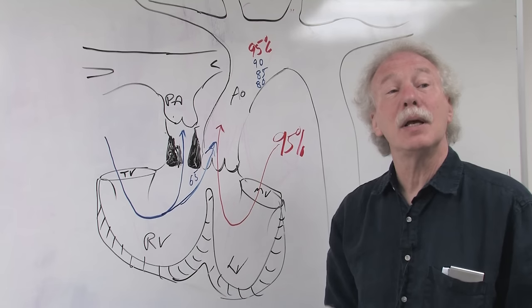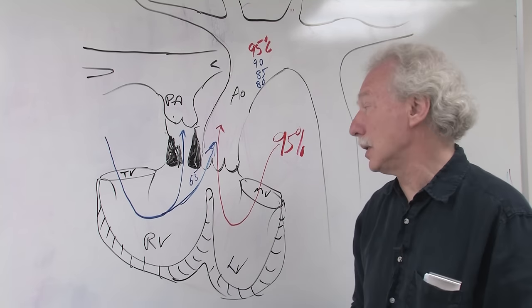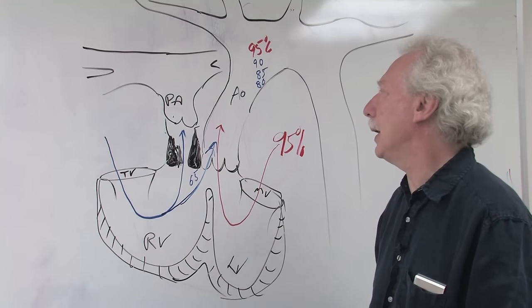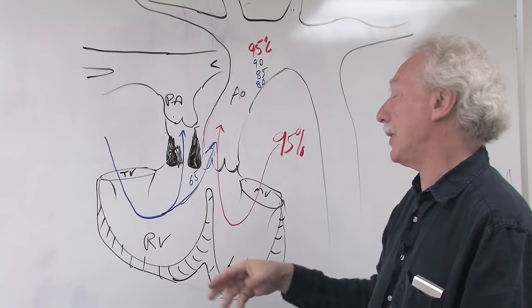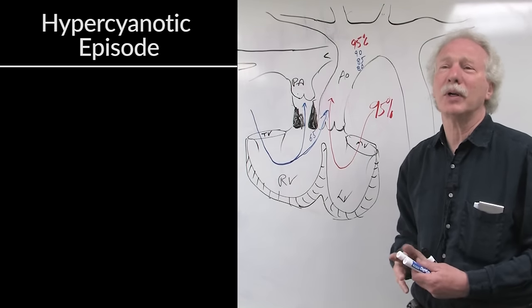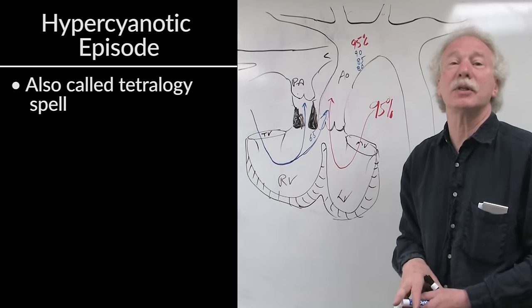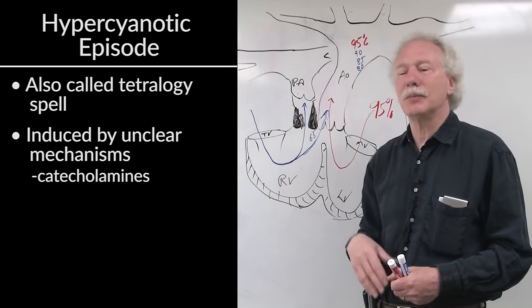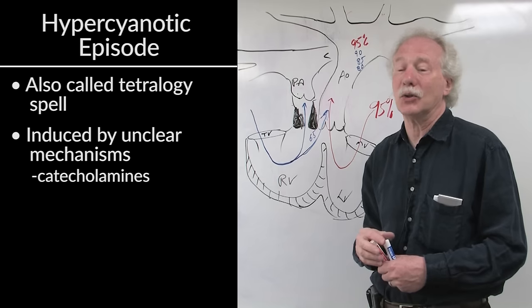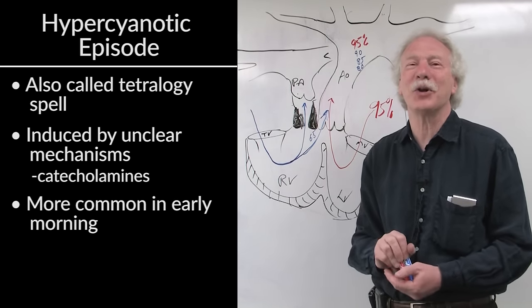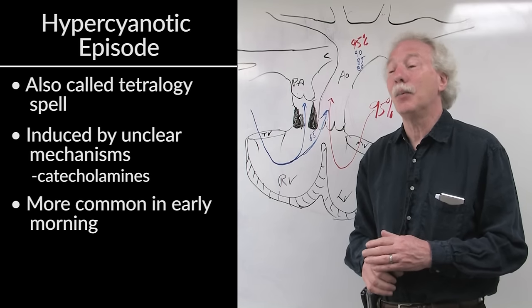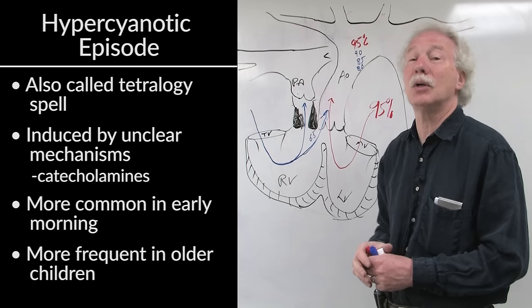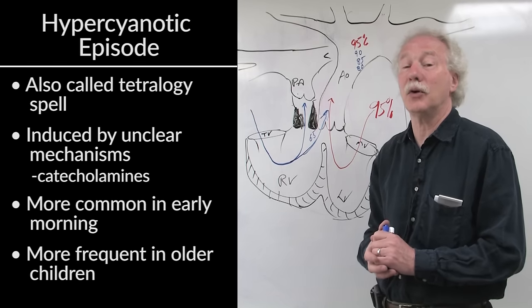How does this happen? With time, there can be increasing muscle mass in the outflow tract, perhaps stimulated by increased contractions. But sometimes, kids will have what is called hypercyanotic episodes or tetralogy spells induced by mechanisms we don't fully understand, sometimes by catecholamines. We know they happen more often in the early morning hours. We don't see a lot of them these days because we're tending to do reparative surgery at an earlier and earlier age.